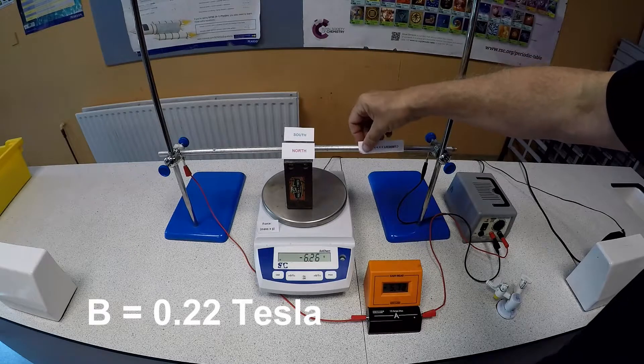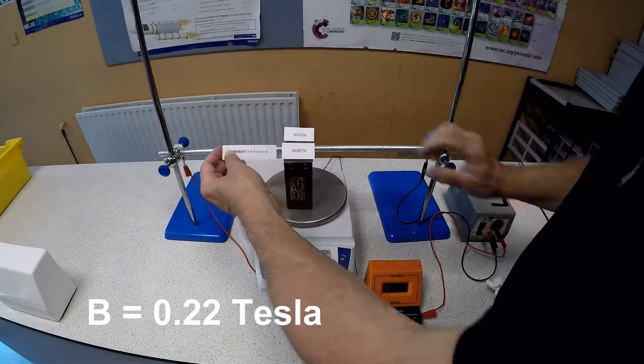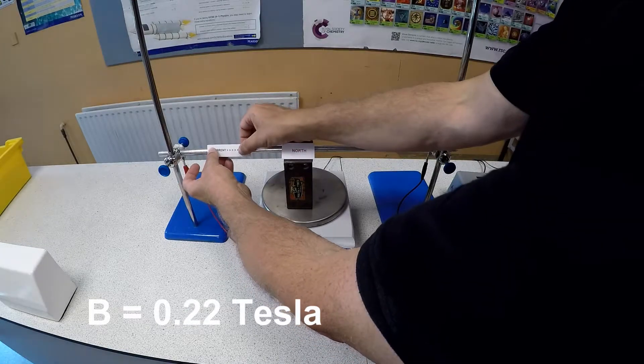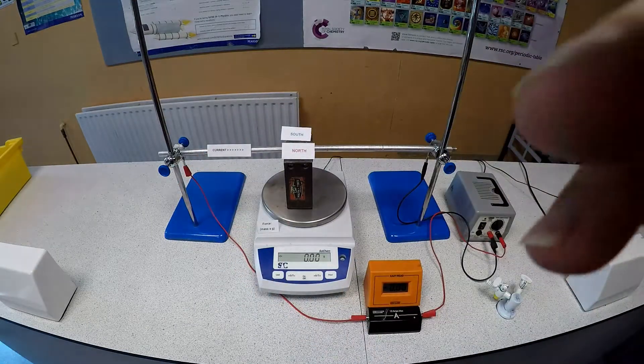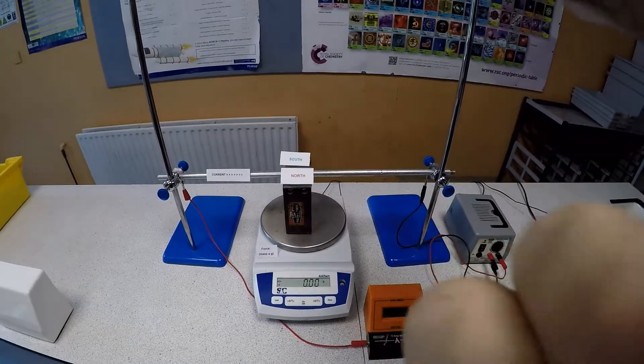It turns out that the strength of this magnet, a fairly typical laboratory magnet, comes in at about 0.22 Tesla. For comparison, strong rare earth magnets come in at about just over 1 Tesla.